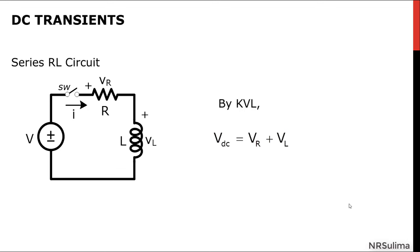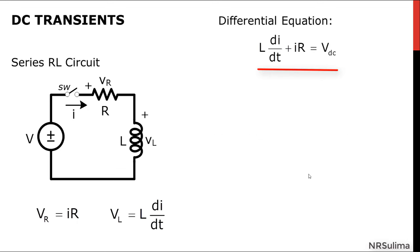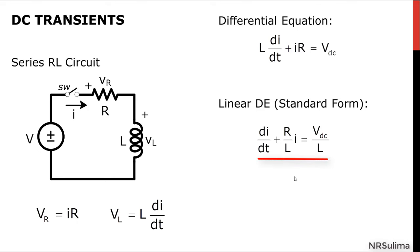Expressing these voltage drops as a function of time, we know that the voltage across the resistor is equal to the product of the current flowing through it multiplied by its resistance, while the voltage across the inductor is equivalent to the product of its inductance and the rate of the current with respect to time. The equation becomes Vdc equals IR plus L di over dt.